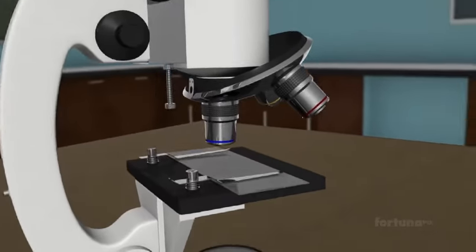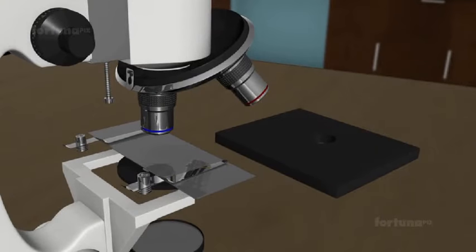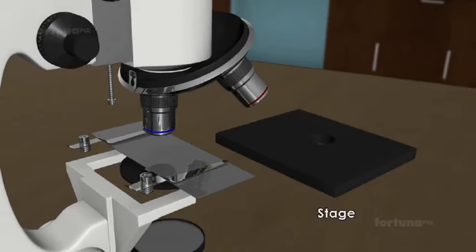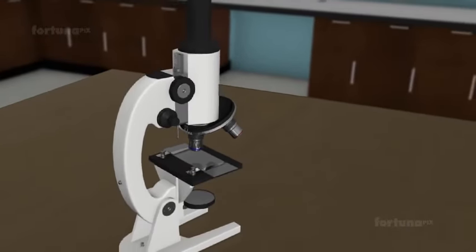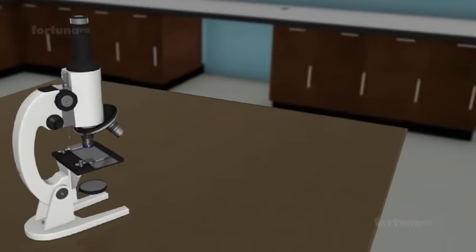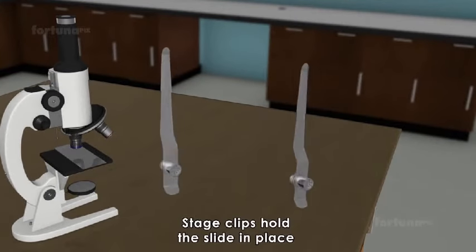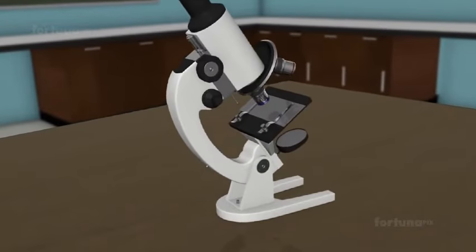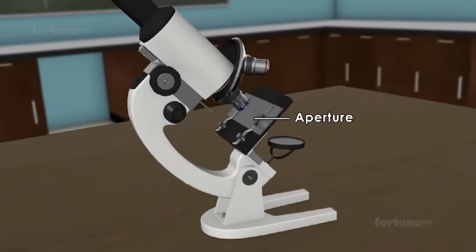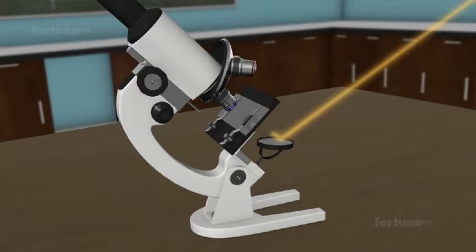Below the objective sits a flat platform known as the stage. On the surface of the stage, two stage clips hold the slide in place. A small aperture is present in the stage, allowing light into the body.